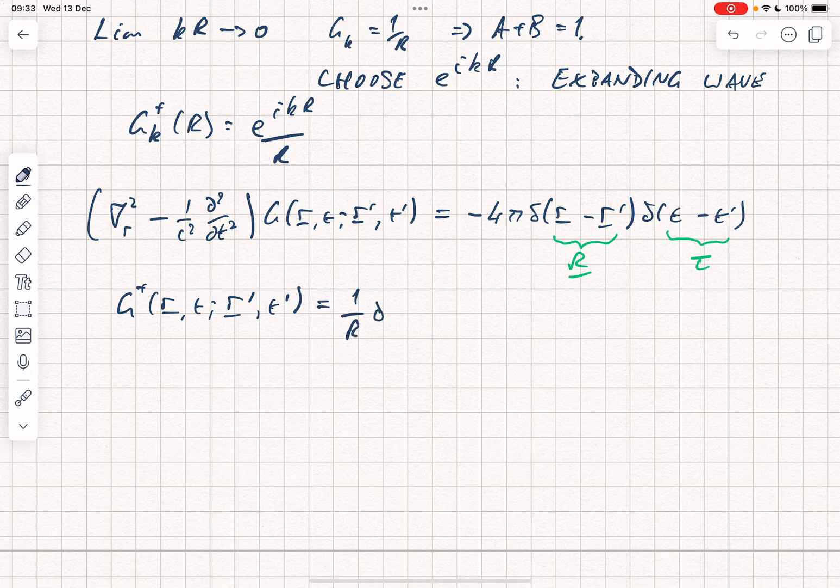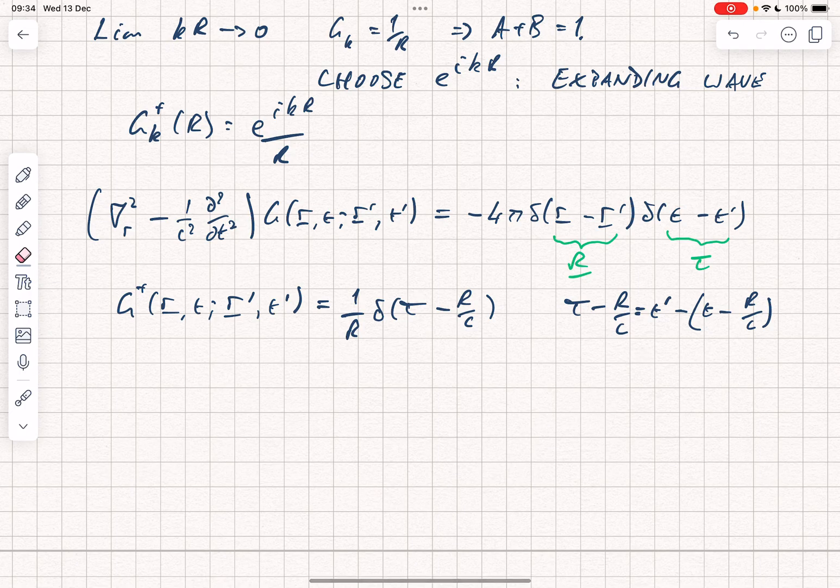This is 1 over r delta of tau minus r over c. I would just note that tau minus r over c equals t minus t prime minus r over c, which is equivalent to what we've called the retarded time t minus t ret. We say it's a retarded time because it's the source at a point in the past which then takes into account the time for the electromagnetic radiation to propagate.